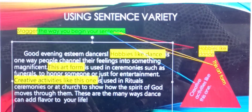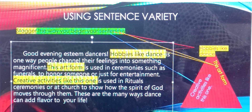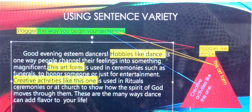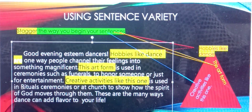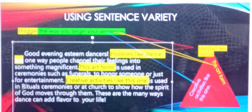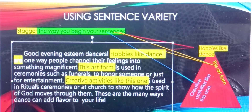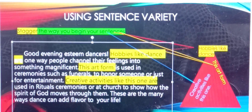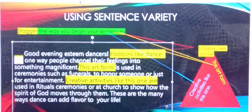Now, notice we have some issues with subject-verb agreement. So let's go back and make the adjustment: 'hobbies like dance are,' 'this art form is' — that's correct — 'creative activities like this one are used in rituals.' When we make changes, sometimes it affects the subject-verb agreement.